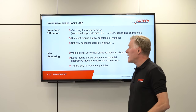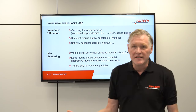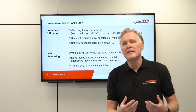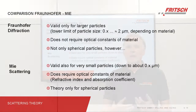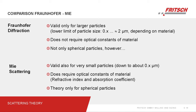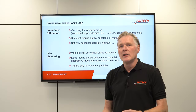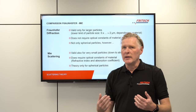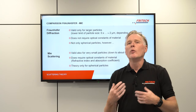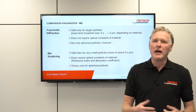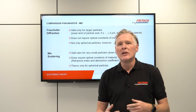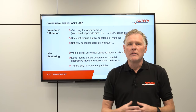Fraunhofer diffraction is valid for large particles — meaning the diameter of the particles must be larger than the wavelength of the light used in the instrument. With our instrument, for example, we have a green laser with a wavelength of around half a micron. So above around two to three microns — which also depends on the material being measured — you get reliable results from Fraunhofer diffraction.